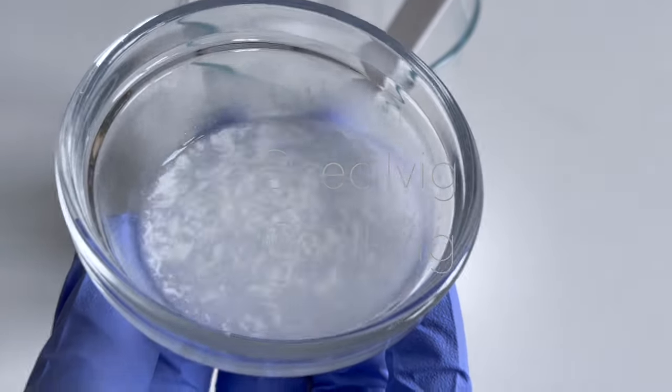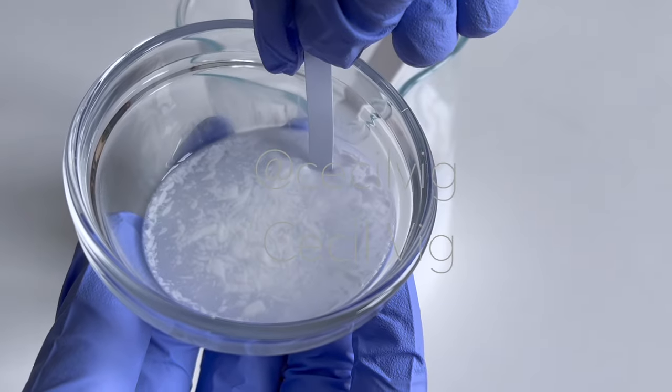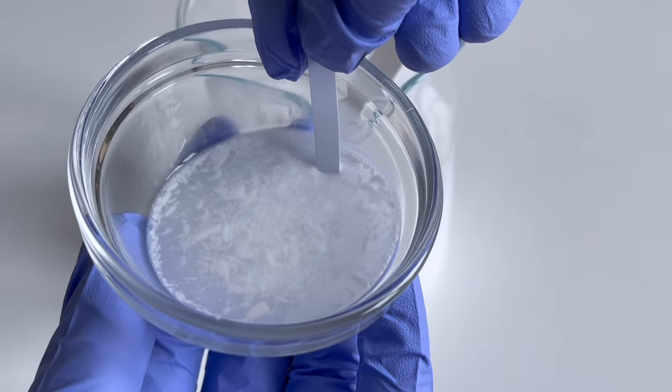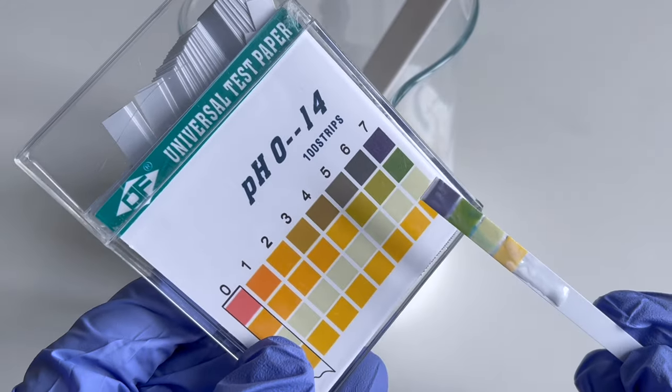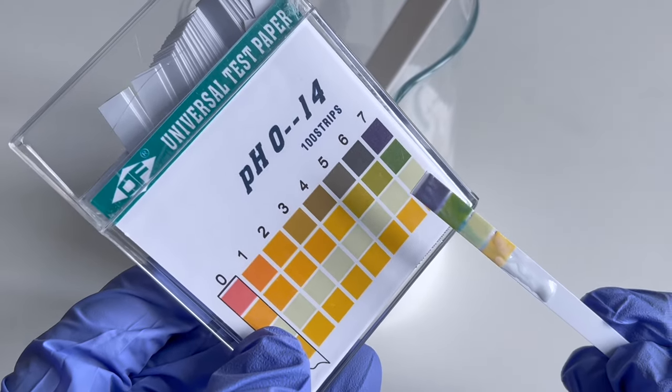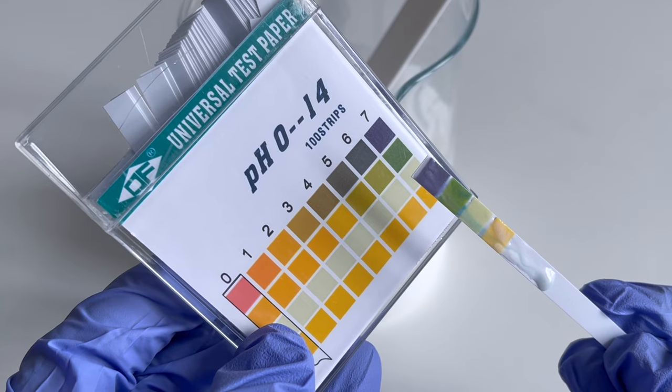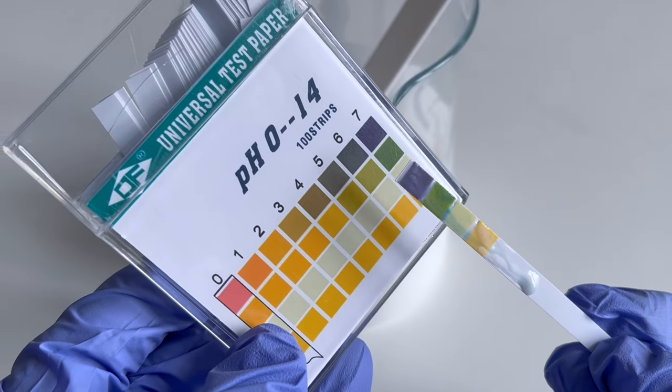Then I dip my pH strip into the mixture for about 10 seconds. Take it out and see what the pH value is. As you can see, the pH value is 7. We need to lower it to between 5 and 5.5.